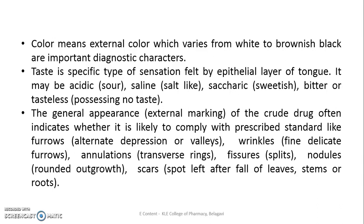The next organoleptic character is color. Color, meaning the external color, which varies from white to brownish black, is an important diagnostic character — observed in different drugs whether leaves, stems, fruits, or flowers. Another character is taste. Taste is a specific sensation felt by the epithelial layer of the tongue. It may be acidic, sour, saline, saccharine (sweet), bitter, or tasteless.